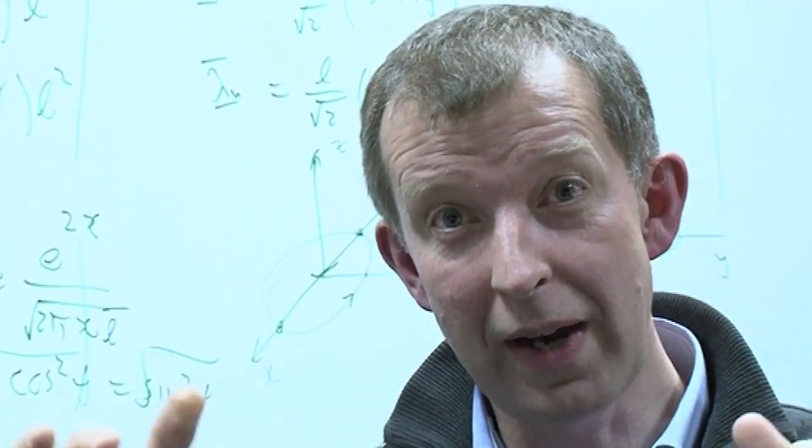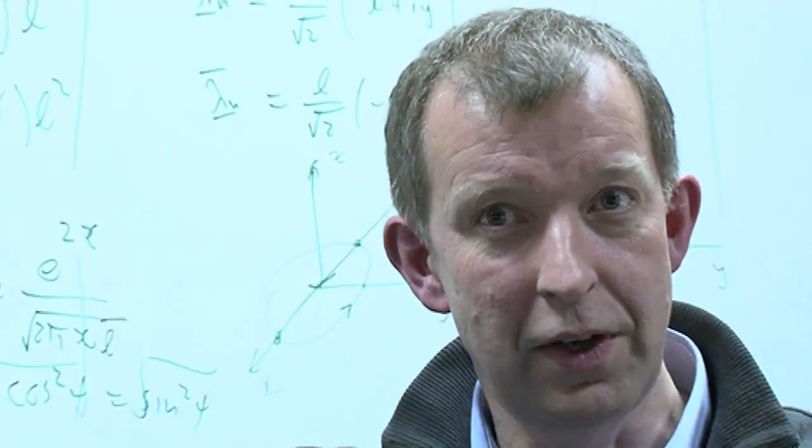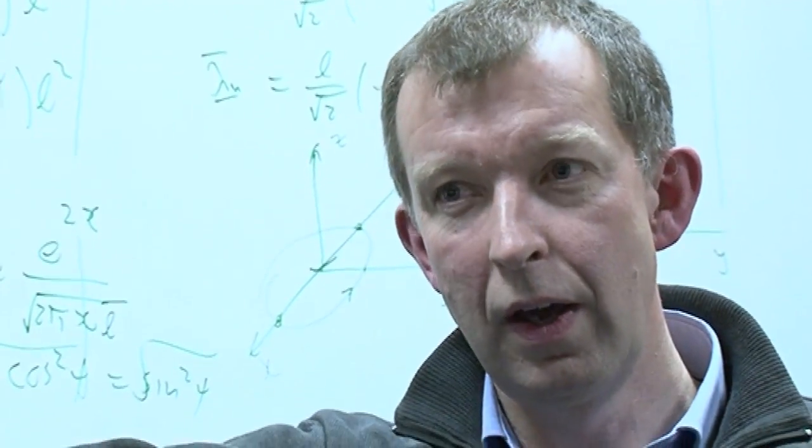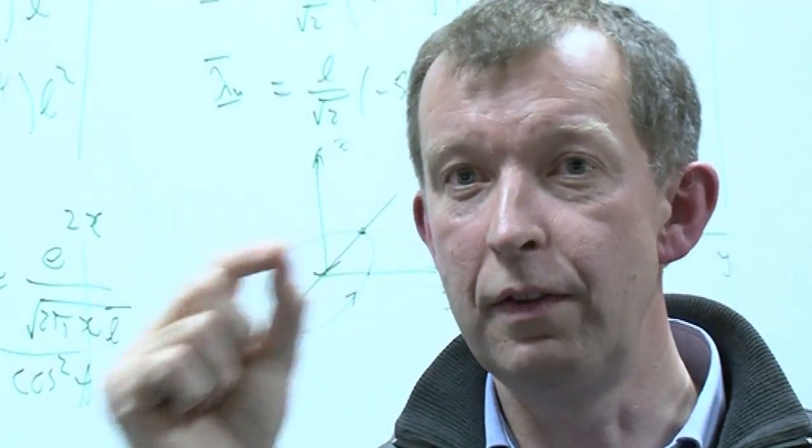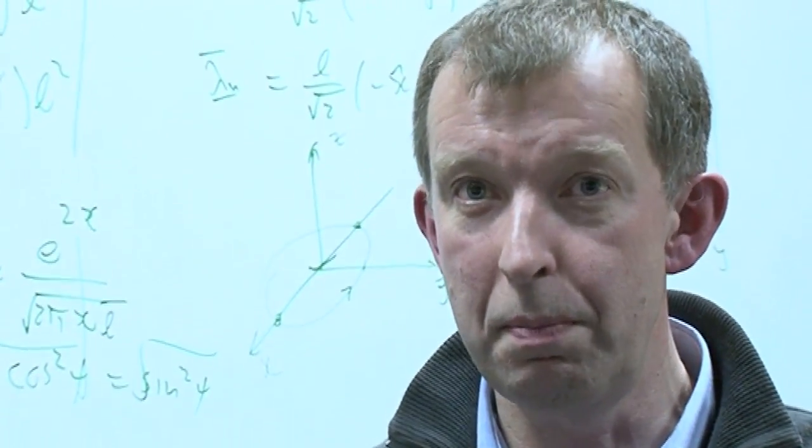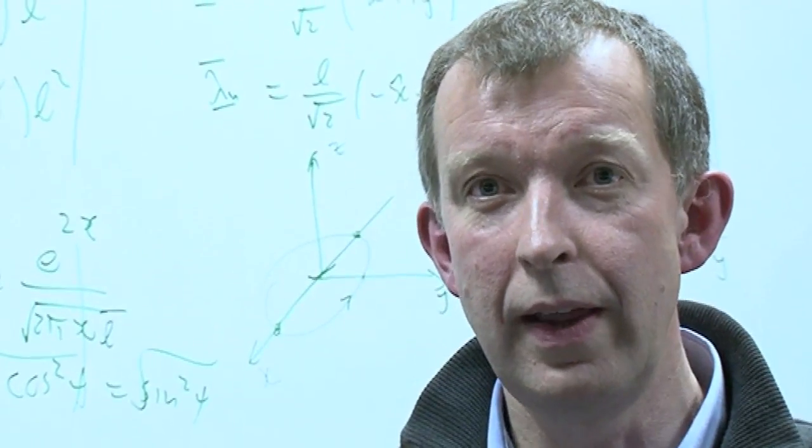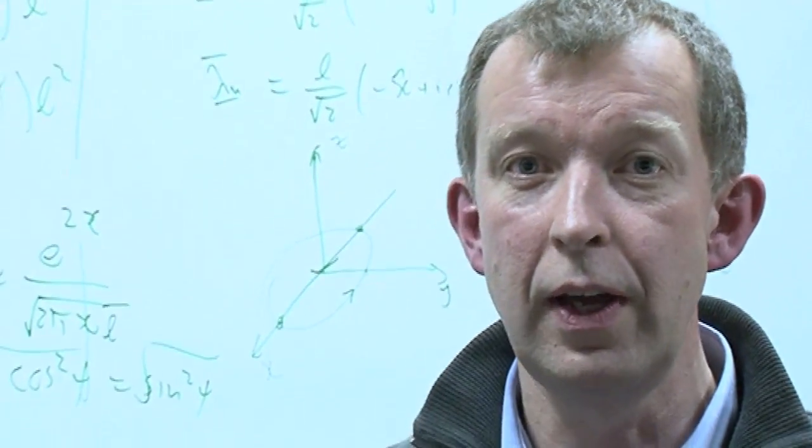So it's the equivalent of, with electromagnetism, we think of the electromagnetic field pervading the universe. Its fluctuations are the photons. The photons of light are the fluctuations in that field. And that's what the equivalent of the boson, the particles are. They're the fluctuations in this field.